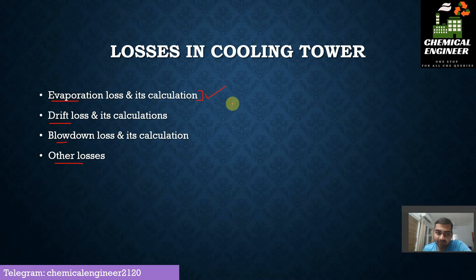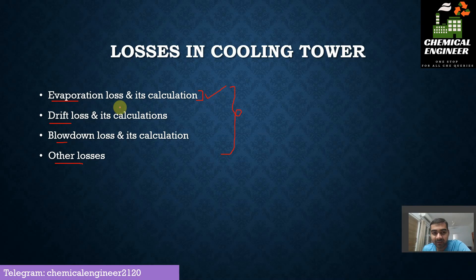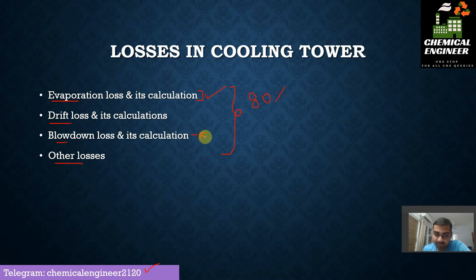In this video we are mainly focusing on evaporation losses in a cooling tower and how to calculate them. In a cooling tower, evaporation loss comprises about 80% of total loss. Other losses like blowdown account for around 15 to 20 percent, and the remaining percentage covers drift and other losses. This is how losses are divided in a cooling tower.